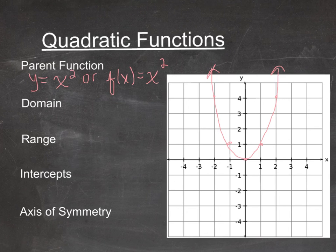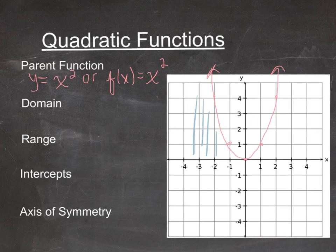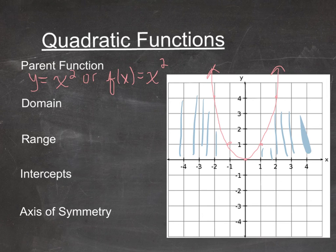The domain of this function: if you were to draw a line from the curve down to the x-axis, you can see that the parabola extends forever and ever, getting wider as it extends upwards. So the domain is from negative infinity to positive infinity.